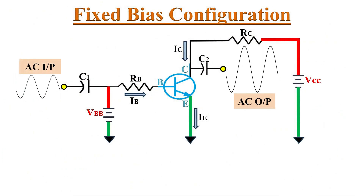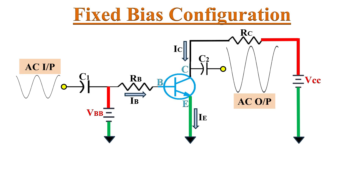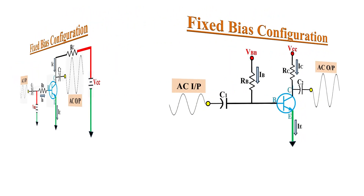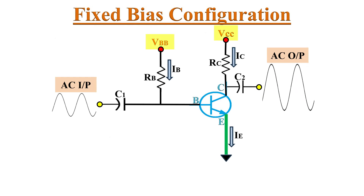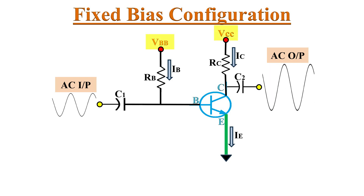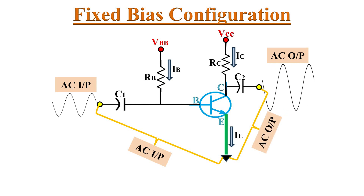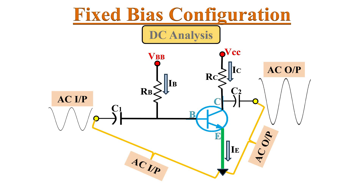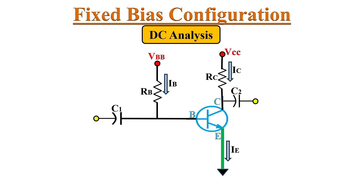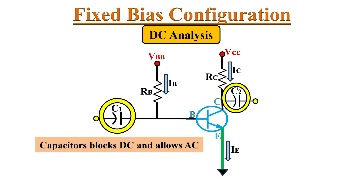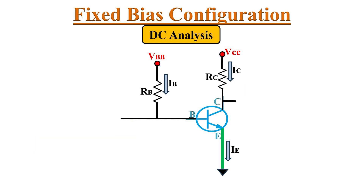Let's start with the simple fixed-bias configuration. This is the circuit of the fixed-bias configuration, which we will redraw for better understanding — simply denoting VCC and VBB with notations instead of battery symbols. The AC input signal is applied between the base and emitter terminals, while the output is derived across the collector and emitter terminals. For DC analysis, we can replace the capacitors with an open circuit, because capacitors block DC and allow AC to pass. Removing the two capacitors gives the equivalent circuit.